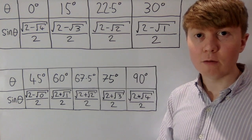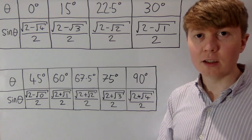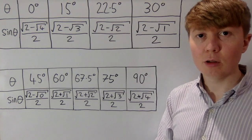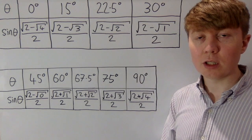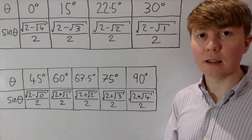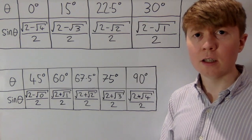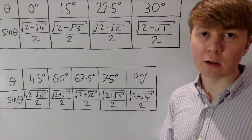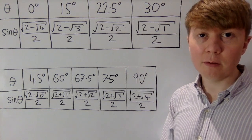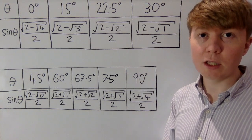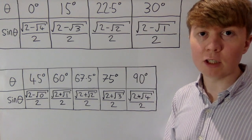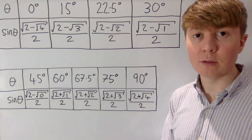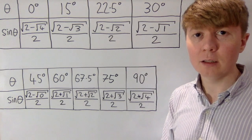You may have seen a nice way to remember the exact values of sin, cos, and tan for 0, 30, 45, 60, and 90 degrees. There's actually a really elegant way of remembering not just these values, but also for 15 degrees, 22.5 degrees, 67.5 degrees, and 75 degrees as well.